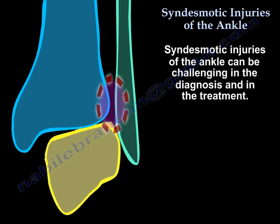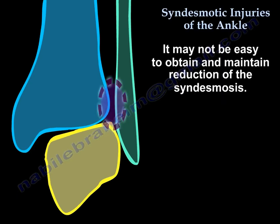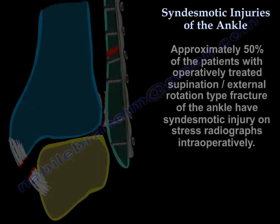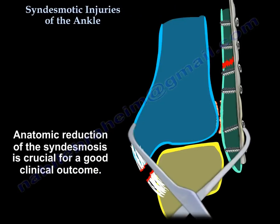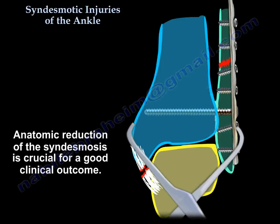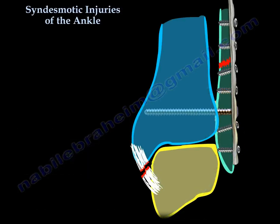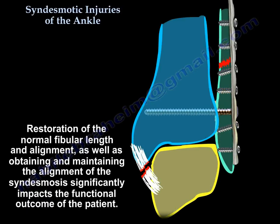Syndesmotic injuries of the ankle can be challenging in the diagnosis and in the treatment. It may not be easy to obtain and maintain reduction of the syndesmosis. Approximately 50% of patients with operatively treated supination external rotation type fractures of the ankle have a syndesmotic injury on stress radiographs intraoperatively. Anatomic reduction of the syndesmosis is crucial for a good clinical outcome. Restoration of the normal fibular length and alignment and obtaining and maintaining alignment of the syndesmosis significantly impacts the functional outcome of the patient.